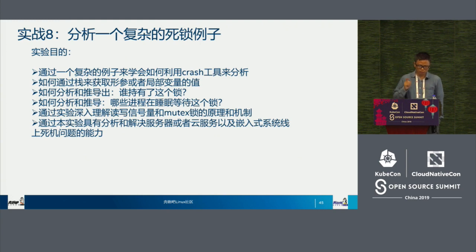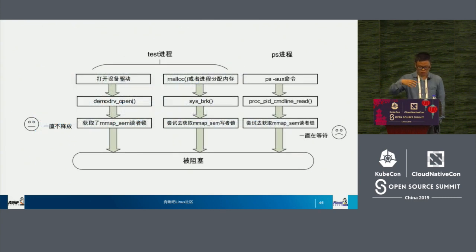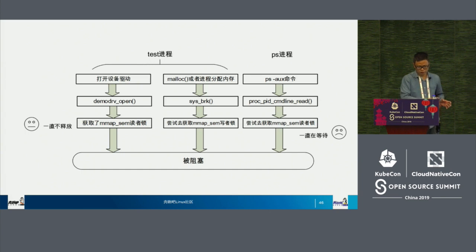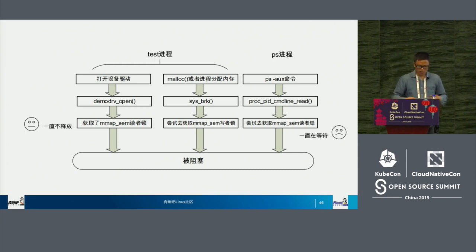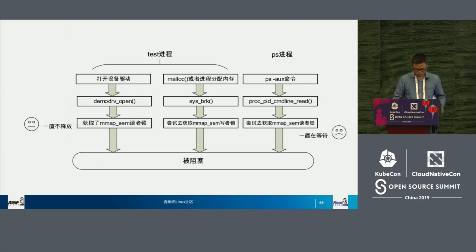We can basically get every information we need in the analysis process. This is a self-developed experiment — we get the rwlock from the main and PS thread. We also need to get the semaphore and rwlock. If two threads are running simultaneously and there is a crash, this is how we analyze the example.